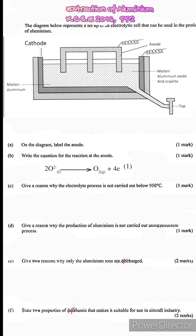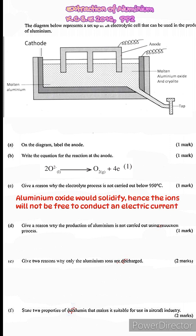C. Give a reason why the electrolytic process is not carried out below 950 degrees Celsius. If the temperatures were to be as low as such what will happen is that the aluminum oxide will solidify. And therefore no mobile ions will be present to conduct the electric current. And therefore electrolysis cannot take place.